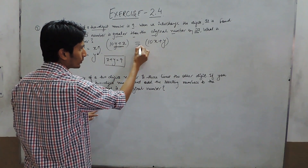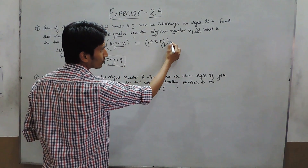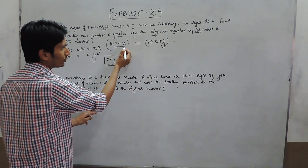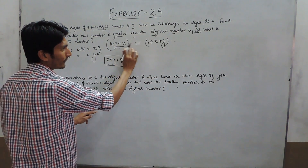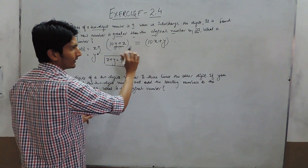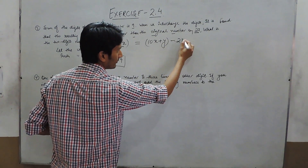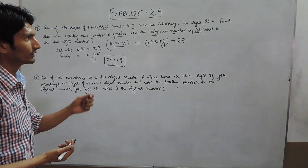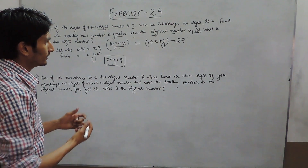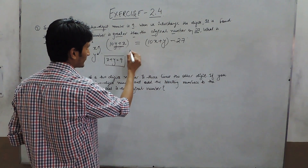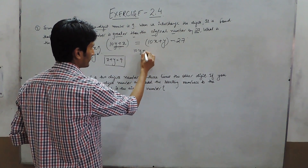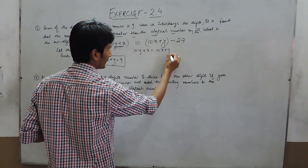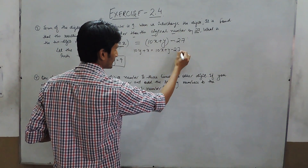If we want to equate this, either we subtract 27 from the new number or add 27 to the original to make them equal. So with 27 separated from the new number, we get: 10y plus x equals 10x plus y minus 27.